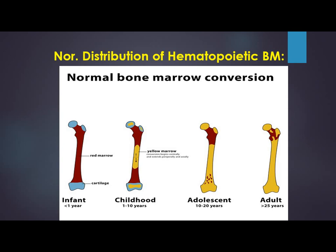First of all, we discuss the normal distribution of hematopoietic bone marrow. There are two topics. One is the conversion of red marrow to yellow marrow, which is a normal physiological process starting at birth. The other is the reverse — the reconversion from yellow to red marrow — which occurs in some situations, as we will discuss.